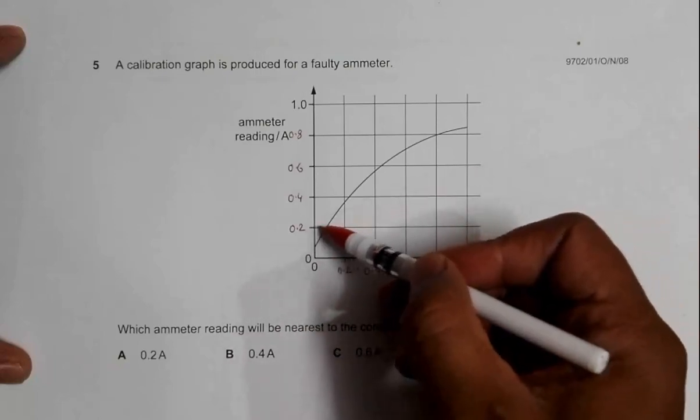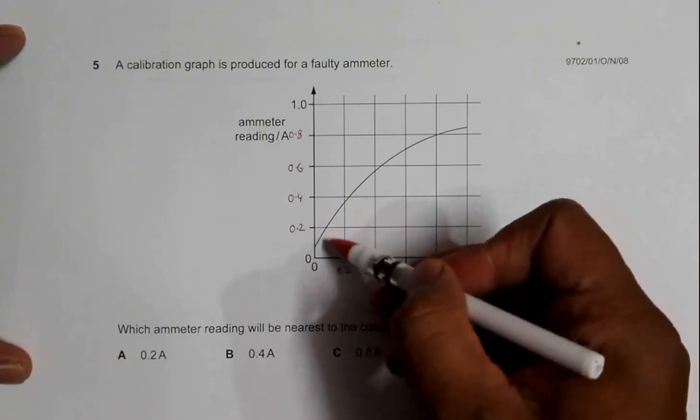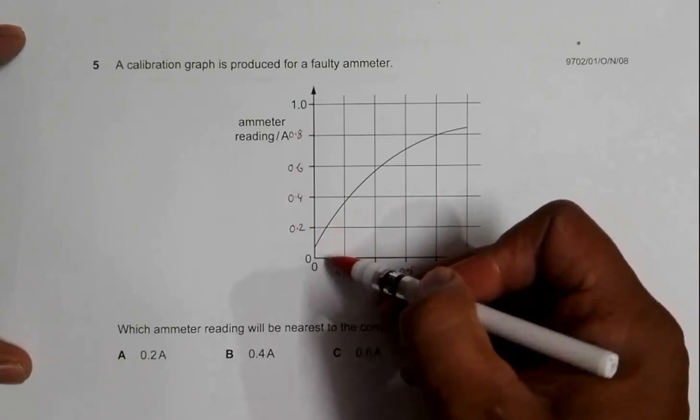The reading shown by the ammeter at this point, the true current is about 0.1 or 0.8, again not matching.